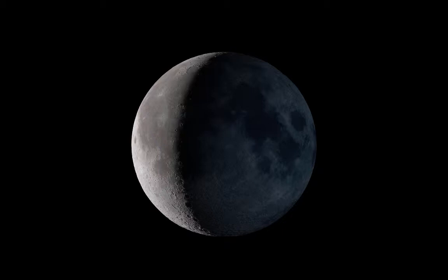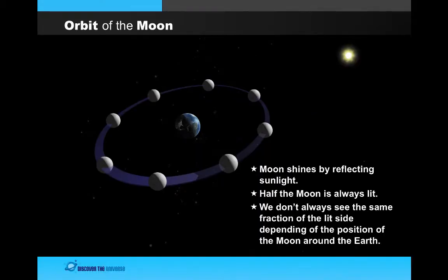But how can we explain those changes? Now of course the moon is always all there, it's always a sphere, but it doesn't appear to have the same shape because not all of it is lit. The first concept we need to understand is that the moon doesn't shine on its own, it shines by reflecting sunlight. And just like any object facing the Sun, half the moon is always lit and half of it is in the dark.